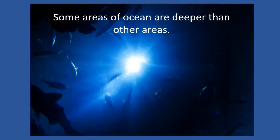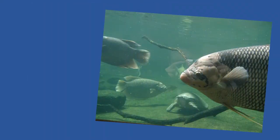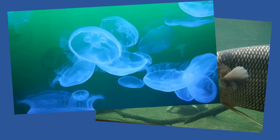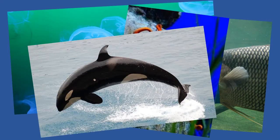Some areas of ocean are deeper than other areas. These depths have been divided into different zones, defined by the amount of sunlight each depth receives, the temperature of the water, and the water pressure. Different animals and plants live in different zones.